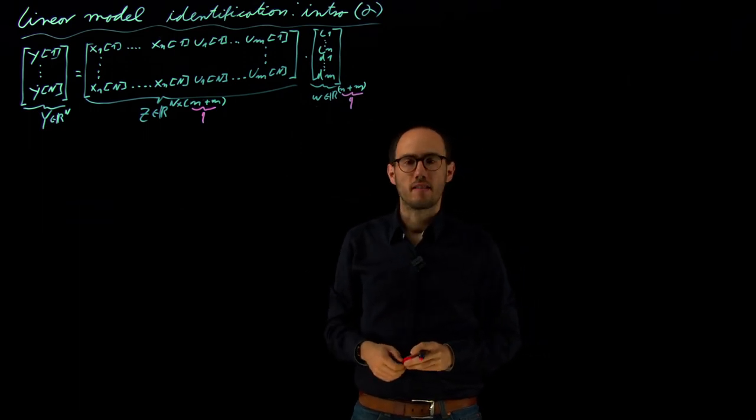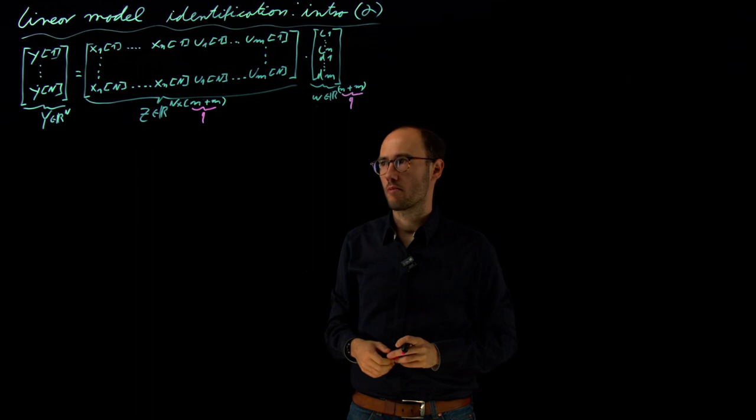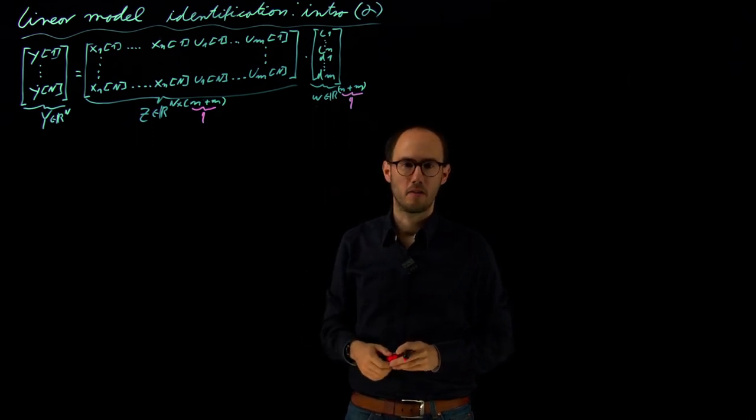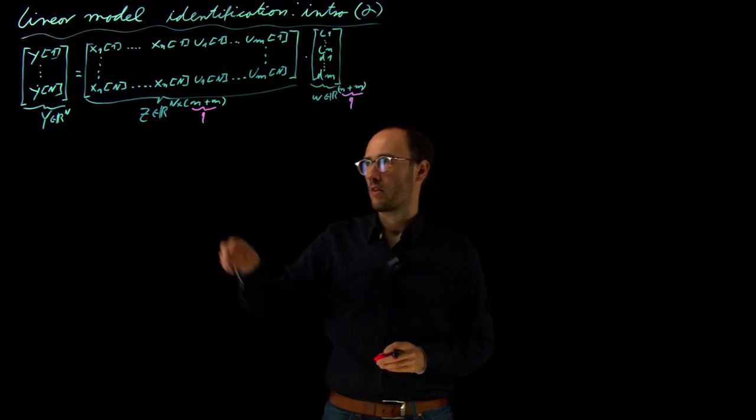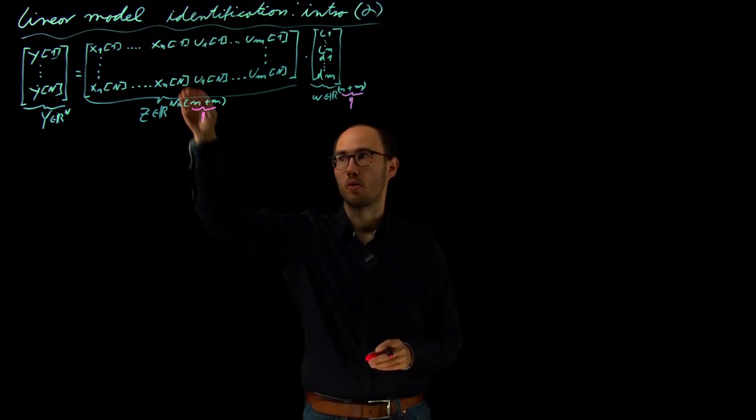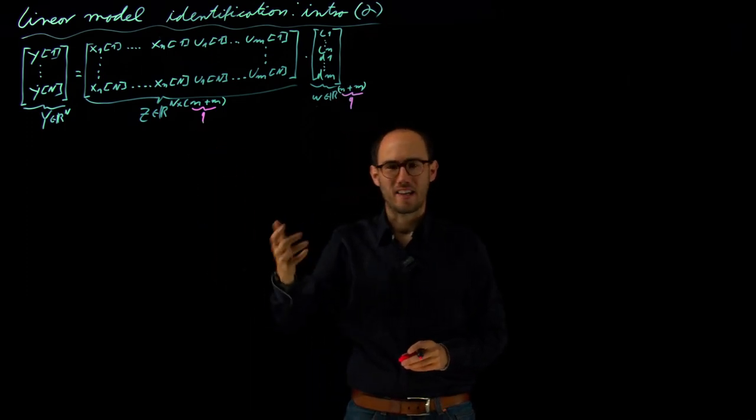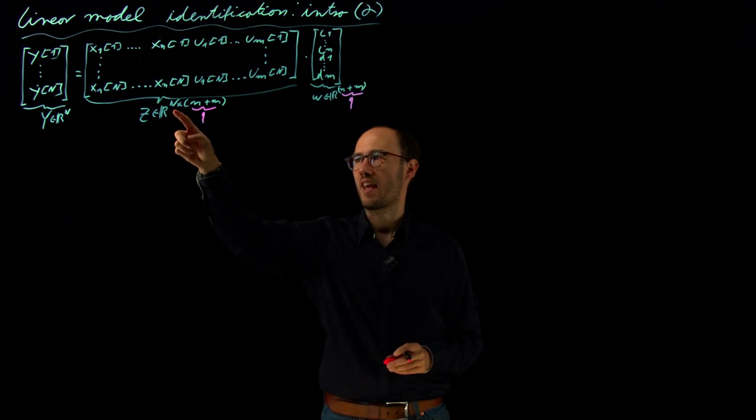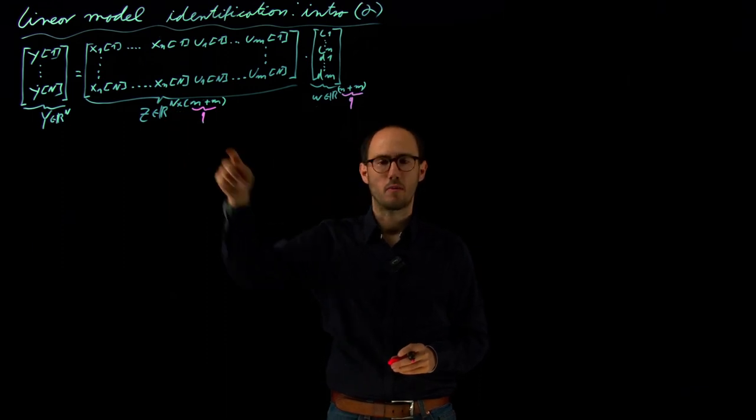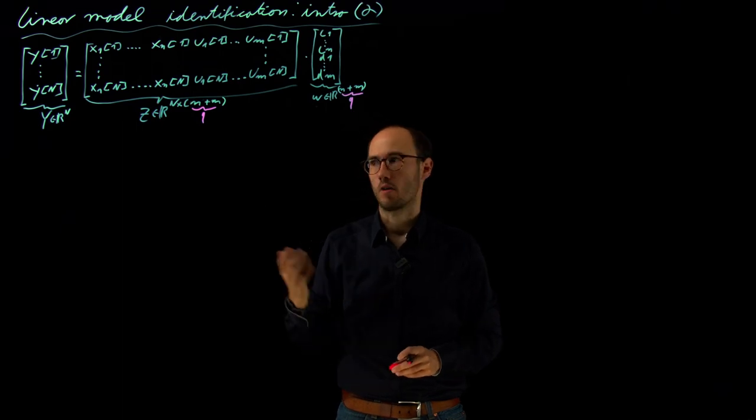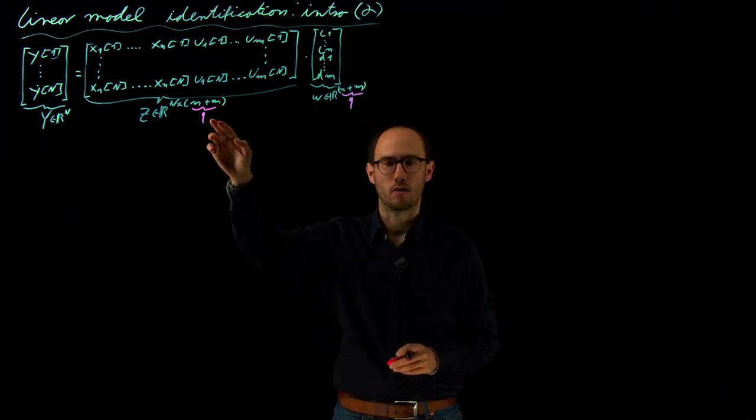One question we need to answer is how many measurement points do we want to obtain before we set up our least squares problem. We have capital N measurement points (the number of rows we have) and in total q parameters. Therefore, at least we need to ensure that N equals q, such that we have enough independent lines of this linear model to identify all q parameters.